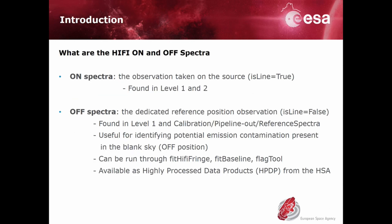The On spectra are the observations when the telescope was pointing at the source. The Off spectra, on the other hand, are obtained either when the telescope was pointing on a dedicated blank sky position, also known as the reference position, or when the instrument was looking at the internal code load. Therefore, the Off spectrum is observing mode dependent.